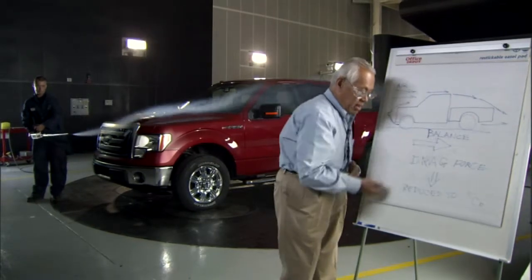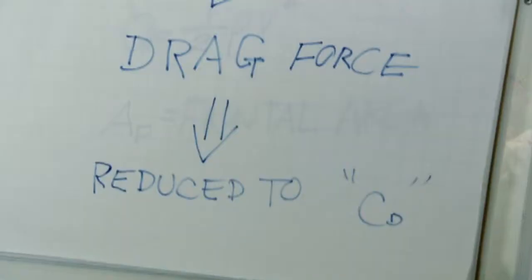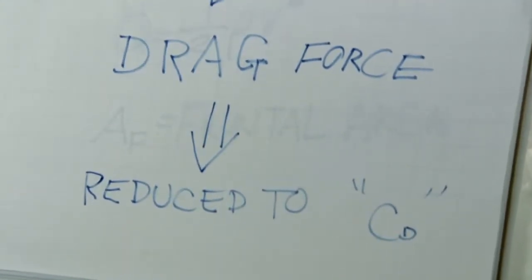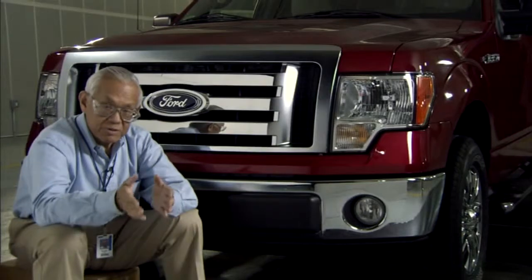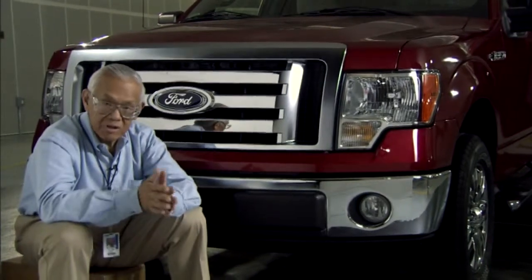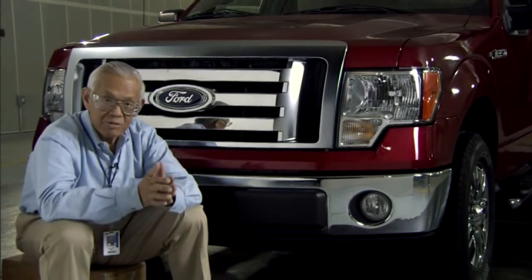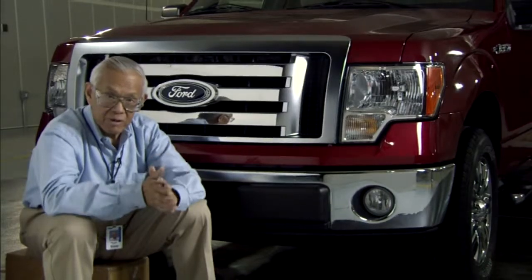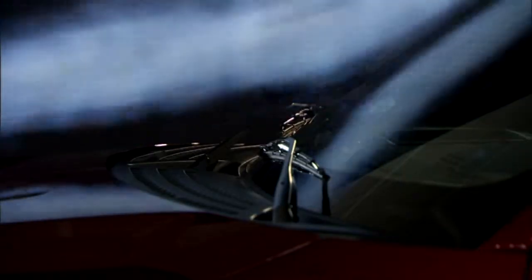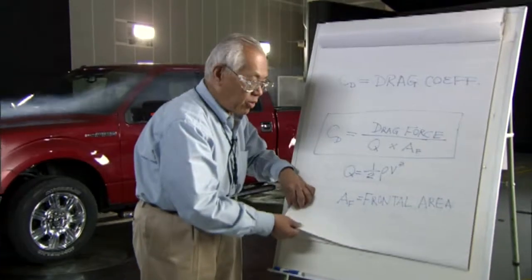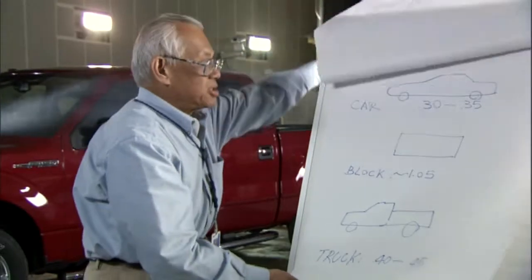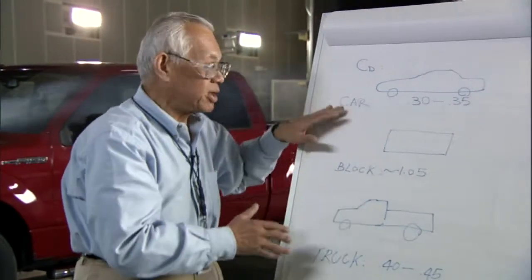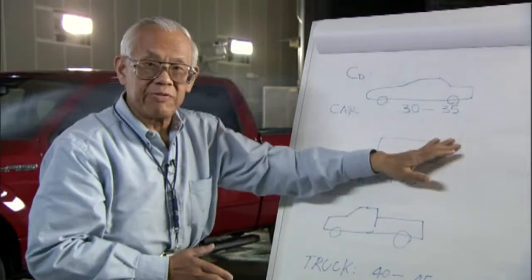We measure this drag force and then reduce it to a term called CD, or drag coefficient. Drag coefficient is a non-dimensional number that relates to the efficiency of the shape — whether the vehicle is efficient or not. In a typical vehicle these days, on a passenger car, you can see a typical CD of 0.3 to 0.35.